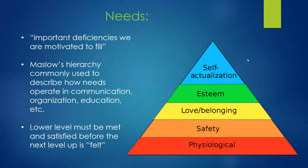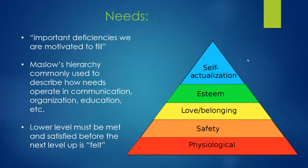When we think about needs, we all know what they are. We have physiological needs — food, shelter — and we have levels of need. It's Maslow's hierarchy. There are deficiencies we're motivated to fill: if I'm hungry right now, I need to go eat; if I'm tired, I want to go to sleep. There are so many levels of need.